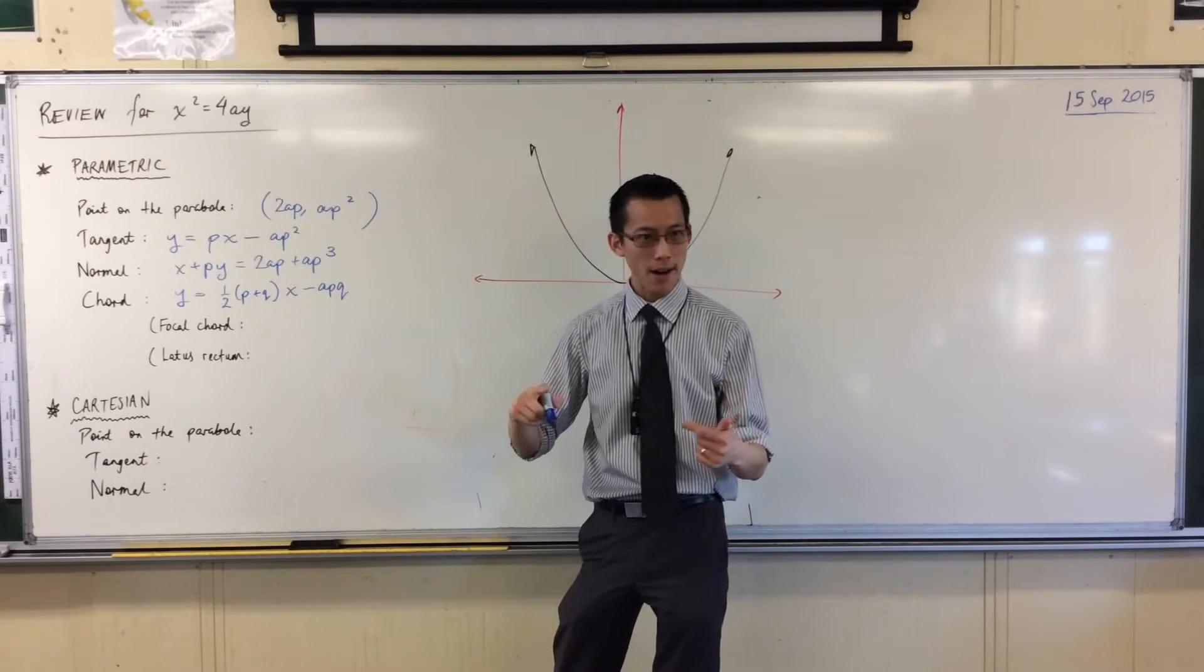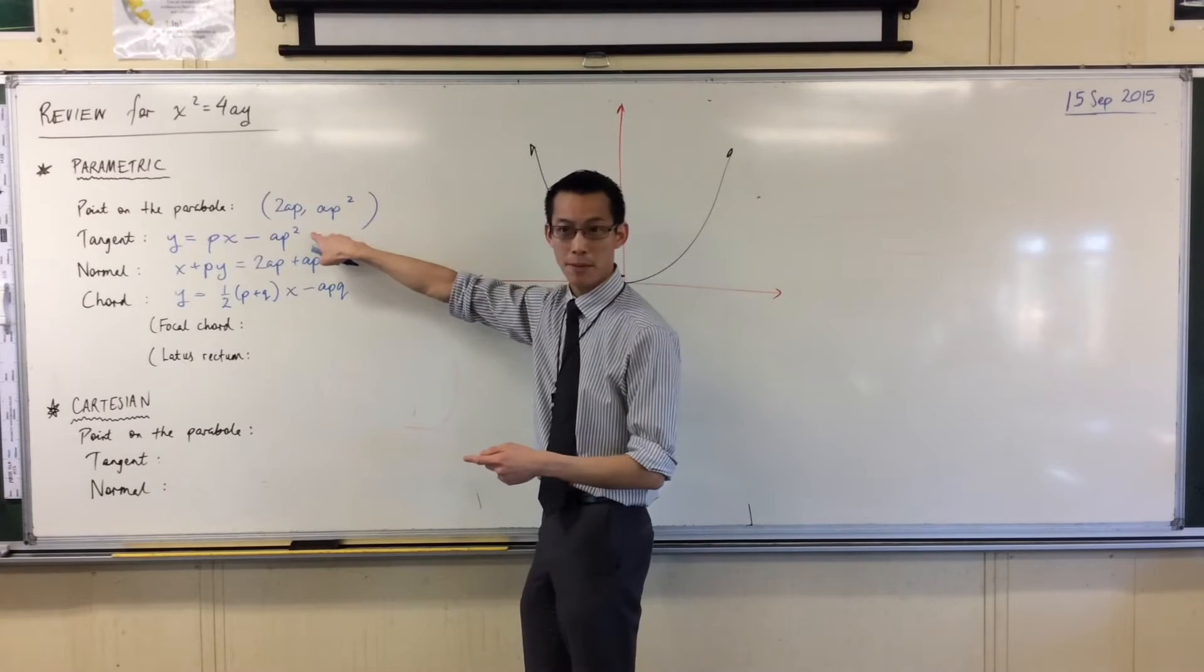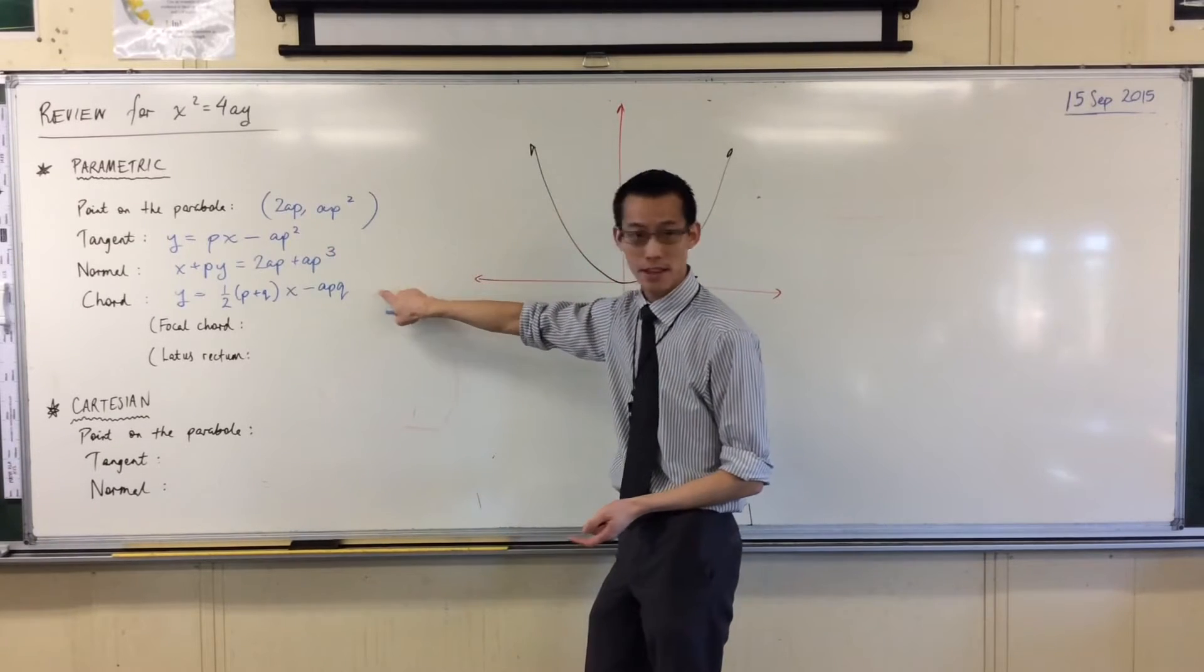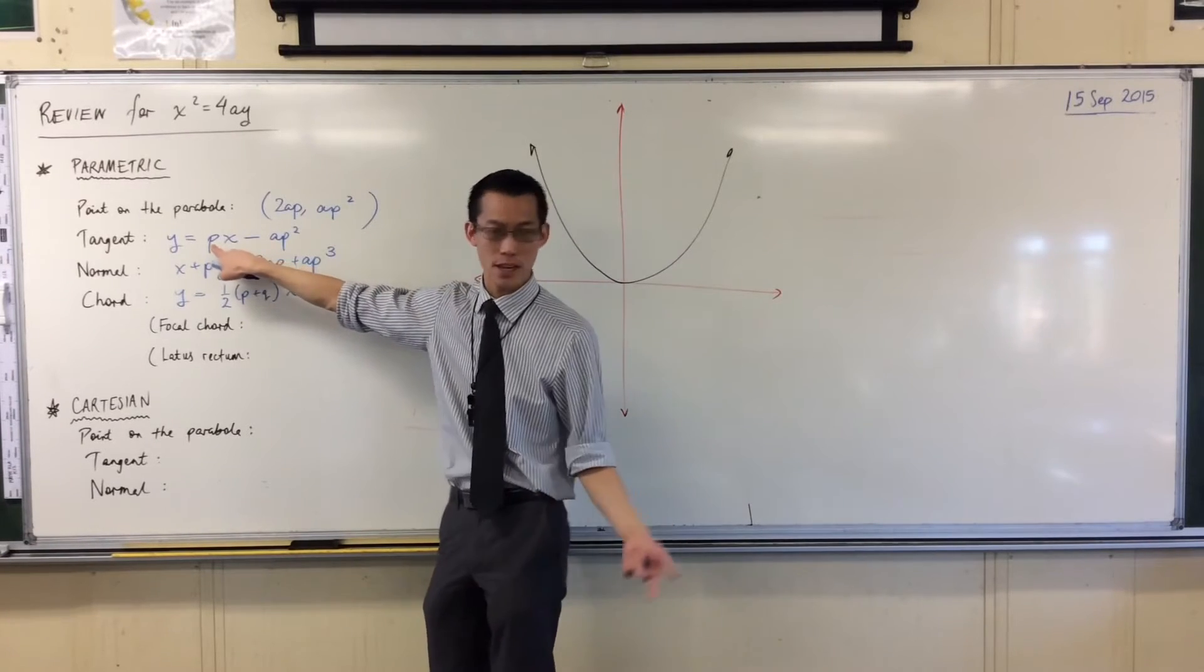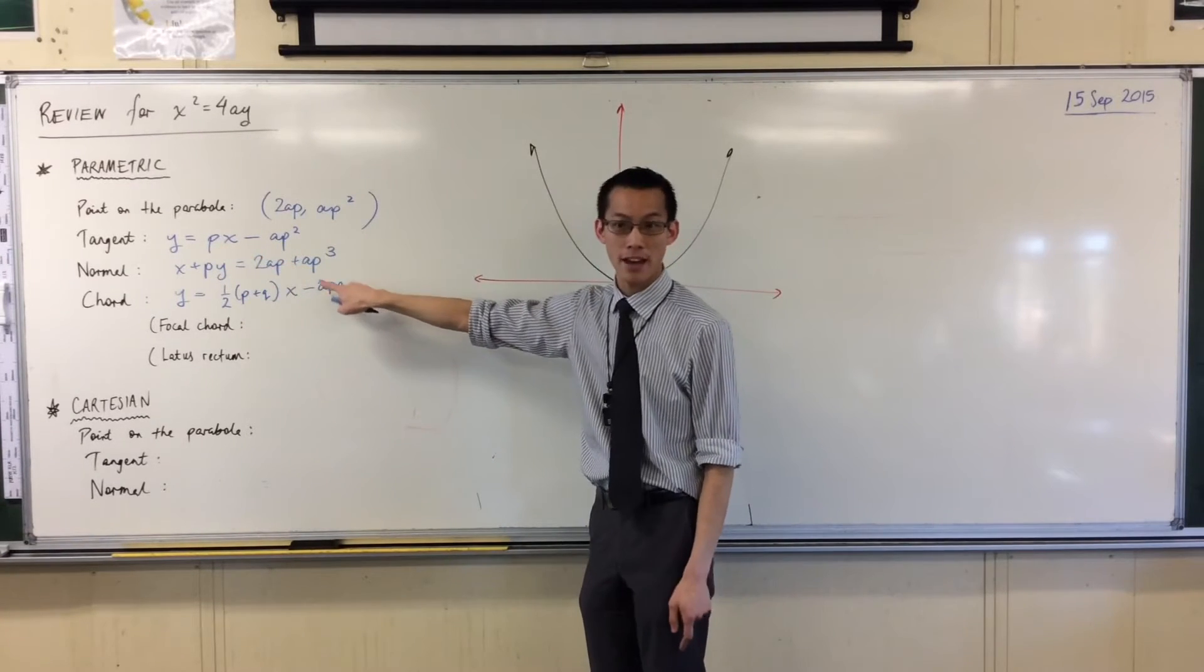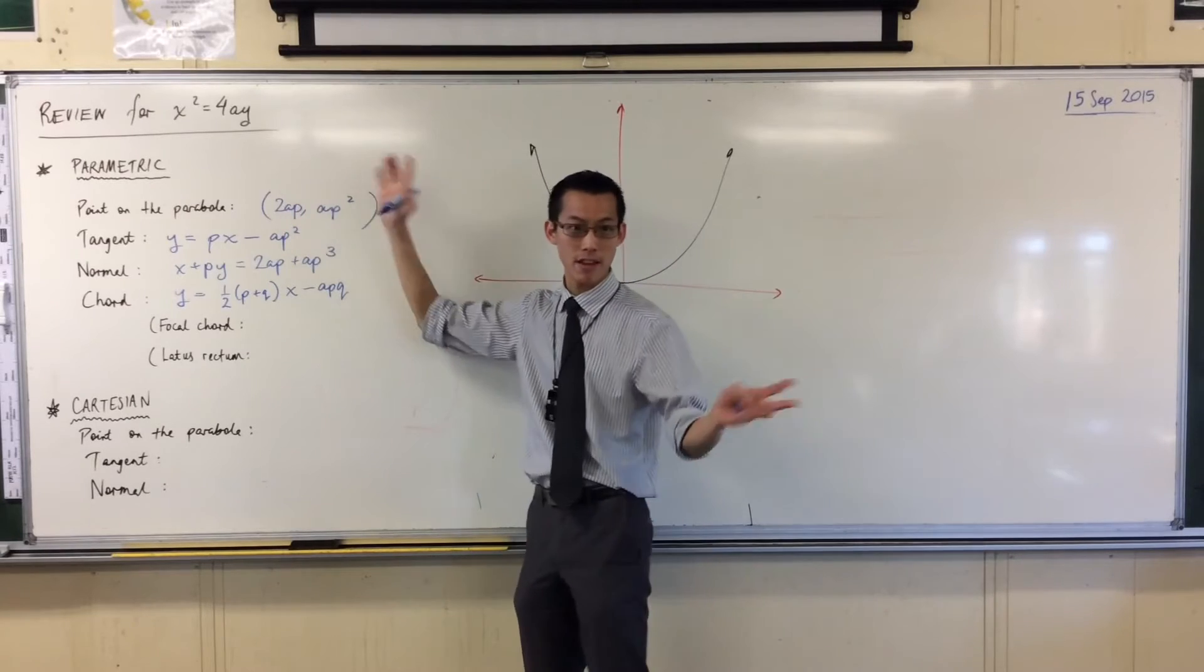And the limit of this as q approaches p, when this becomes p, you get half times 2p, which is p, and you get a half times 2p, et voila.